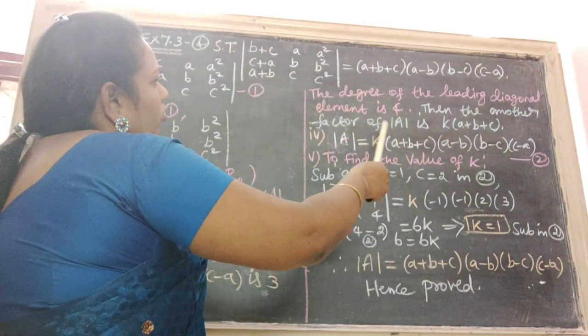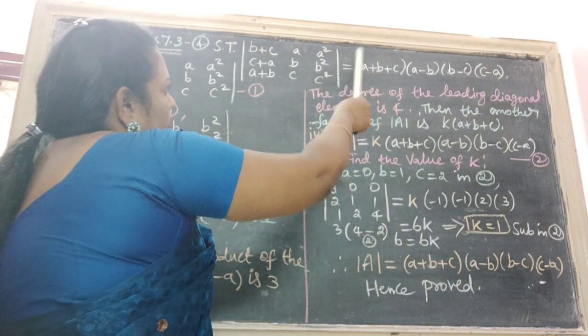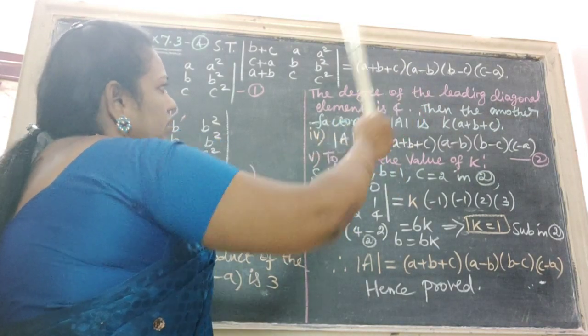Then the another factor of determinant A is, this is the factor A minus B, B minus C, C minus A.